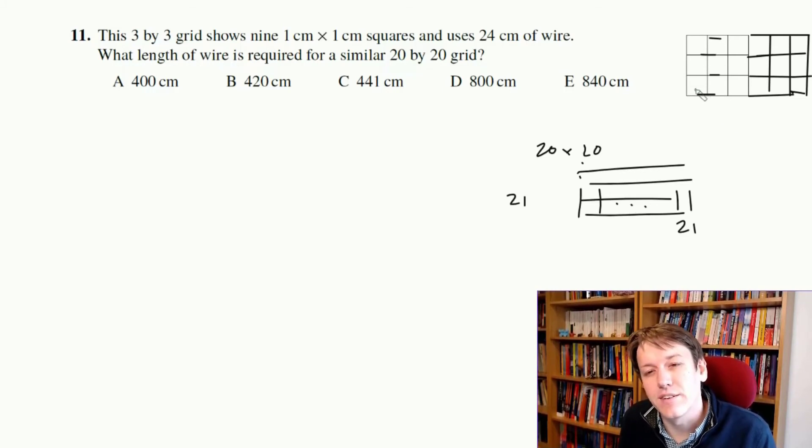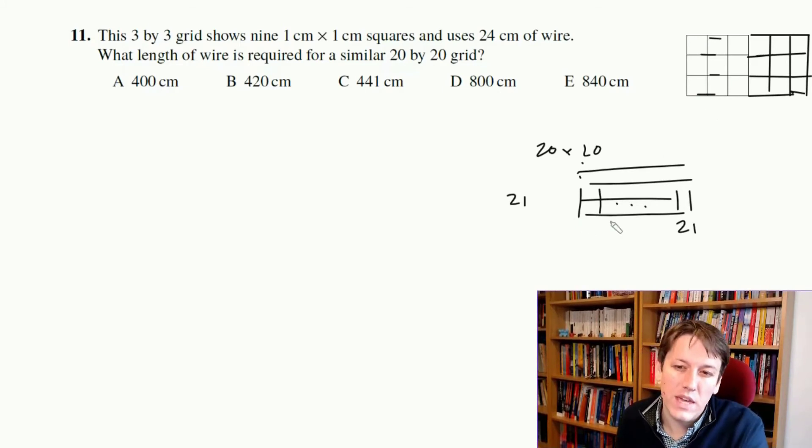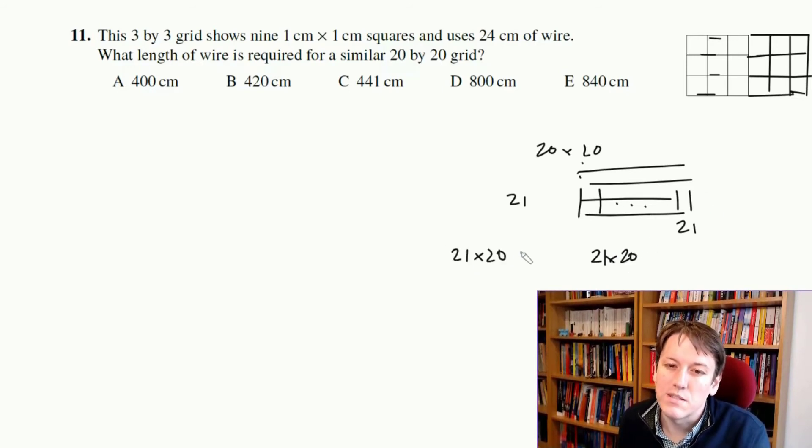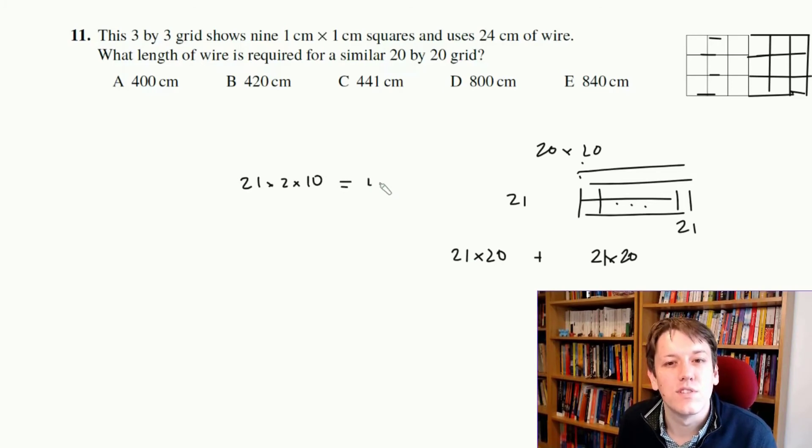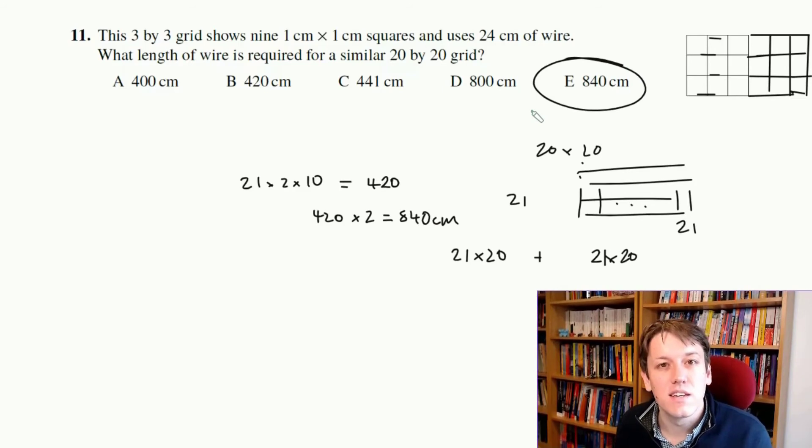So here I'm going to have 21 horizontal lines of 20 centimetres each, and I'm going to have 21 vertical lines of 20 centimetres each, so I add those together. So 21 times 20 is 21 times 2 times 10, which is 420, I'm going to have two of those, so 420 plus 420, or 420 times 2, that gives me 840 centimetres, and the final answer is E, 840.